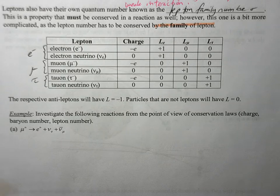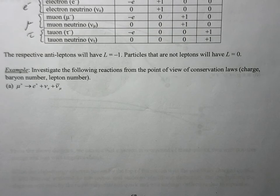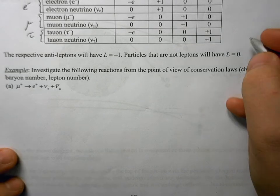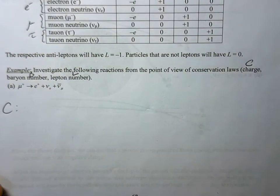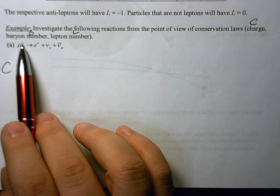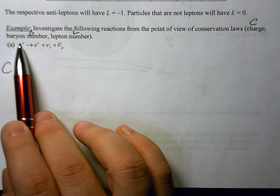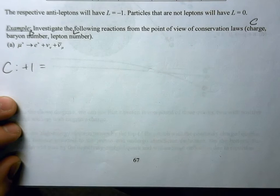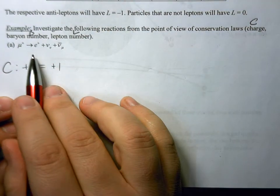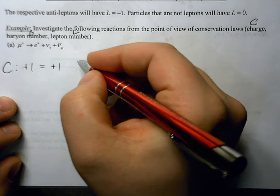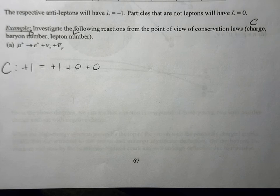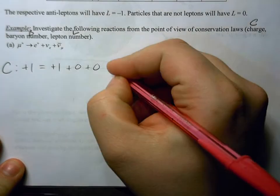We're going to look at four reactions based on the conservation laws of charge, baryon number, and lepton number — doing the first two here and the second two in another video. For the first reaction, let's start with charge. We have an anti-muon with a charge of plus one. On the right side, we have a positron, also with a charge of plus one. Then we have an electron neutrino and a muon anti-neutrino, both with zero charge. Charge is conserved: one on the left equals one on the right.